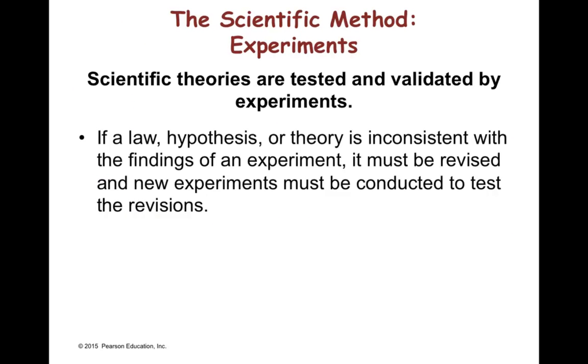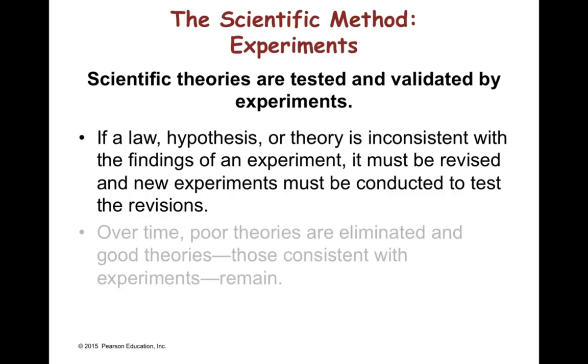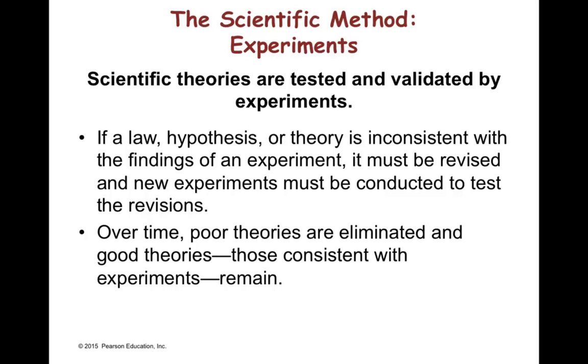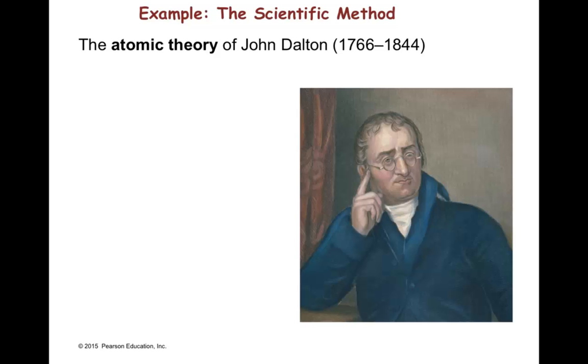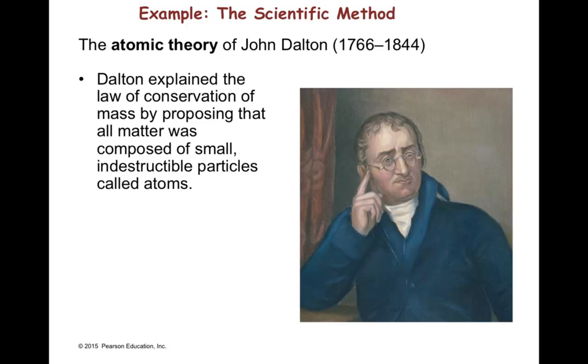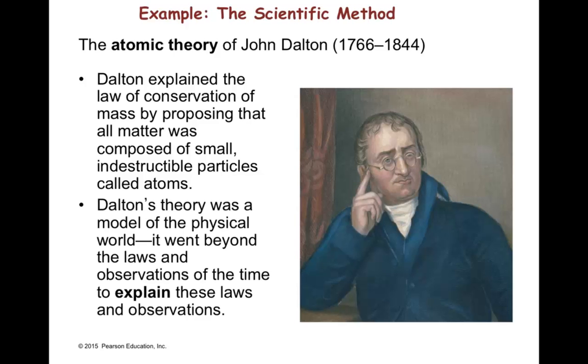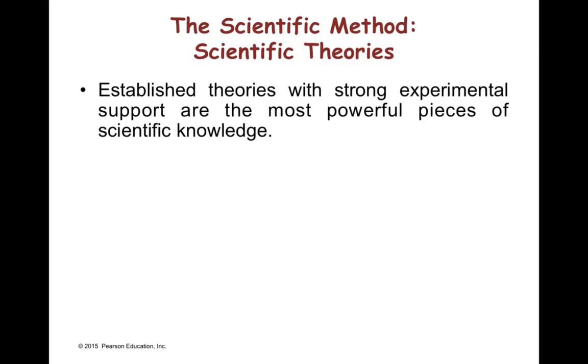So, if a law, hypothesis, or theory is inconsistent with the findings of an experiment, it must be revised and new experiments must be conducted to test the revisions. Over time, poor theories are eliminated and good theories, those consistent with experiments, remain. An example of a theory obtained by the scientific method is the atomic theory by John Dalton. Dalton explained the law of conservation of mass by proposing that all matter was composed of small indestructible particles called atoms. Dalton's theory was a model of the physical world. It went beyond the laws and observation of the time to explain these laws and observations.